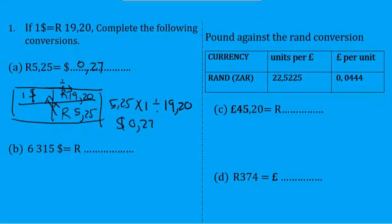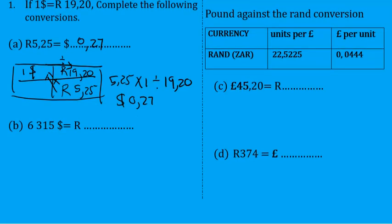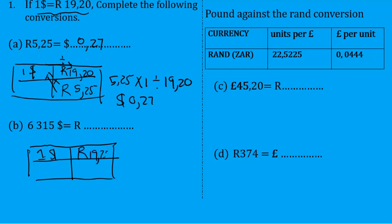Let's go on to (b). We'll do (b) the same way, still using the same exchange rate, but now we want to convert dollars to rands. Remember, the given exchange rate must go in the first row. So you've got one dollar again: 19 rands 20 cents.